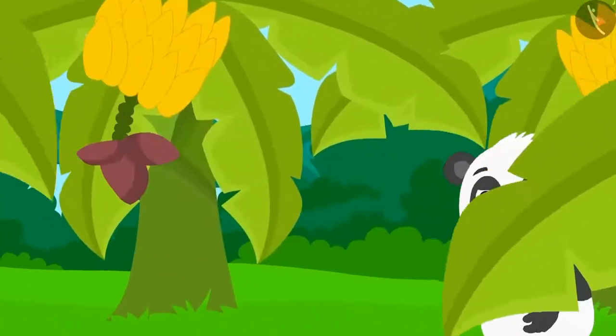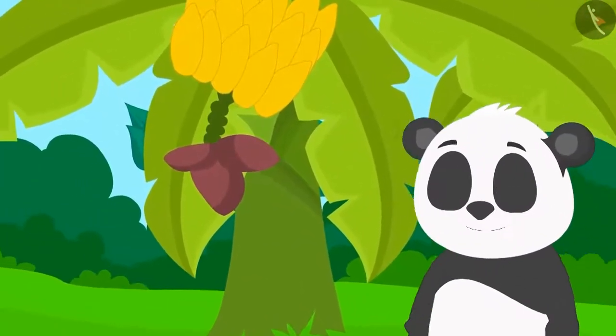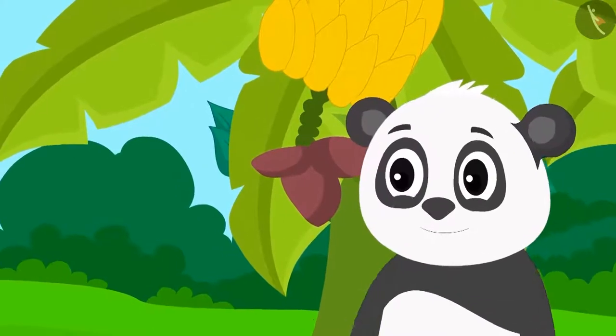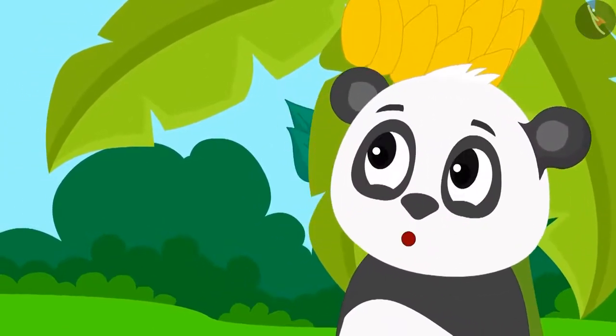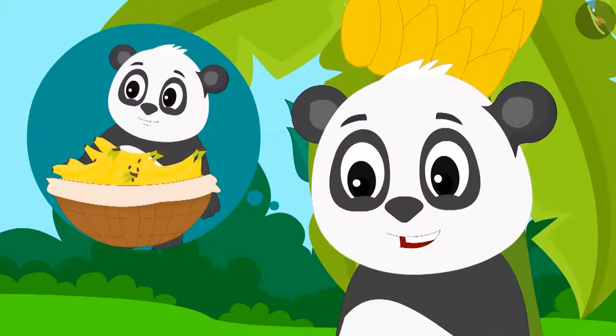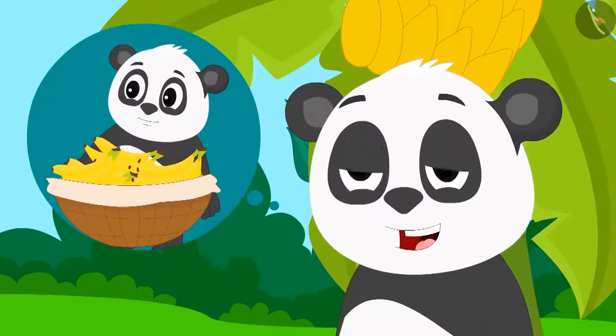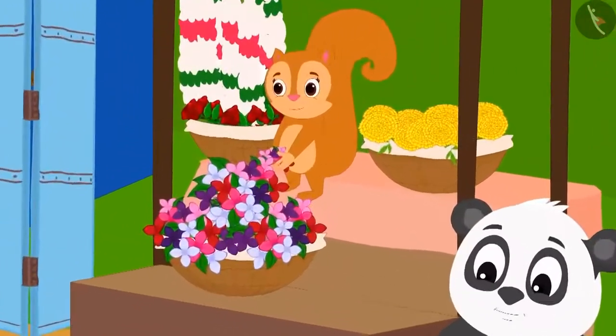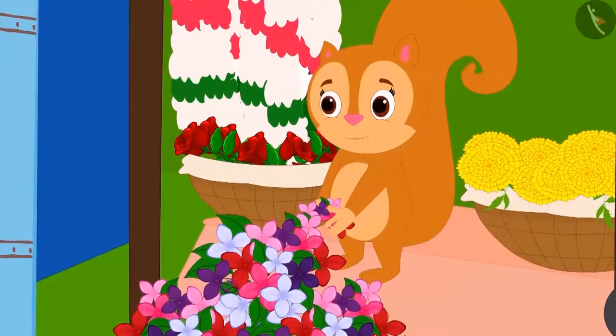Golu Panda's banana orchards reaped a good harvest this season. He thought that he can earn a lot of money by selling these bananas in the market. At the same time, Chanda Squirrel too had set up her flower stall.